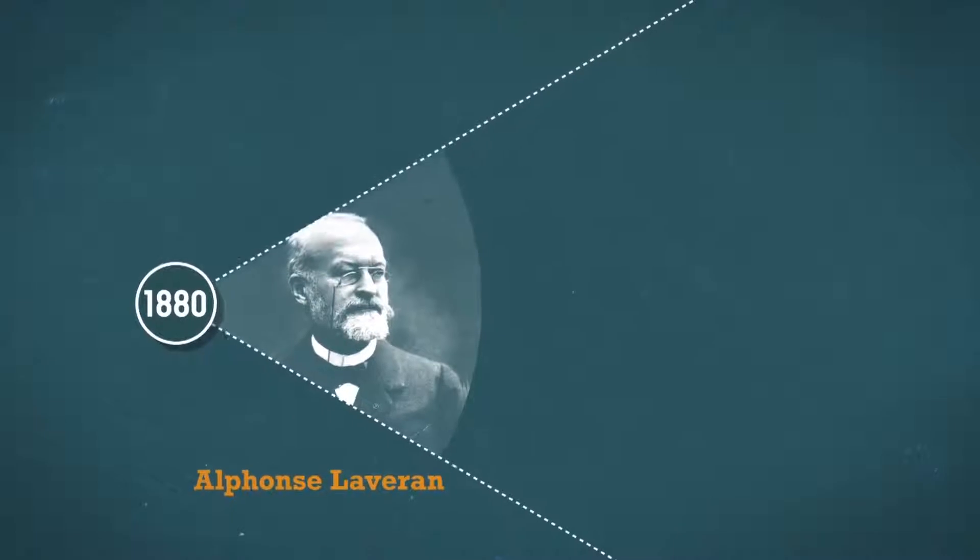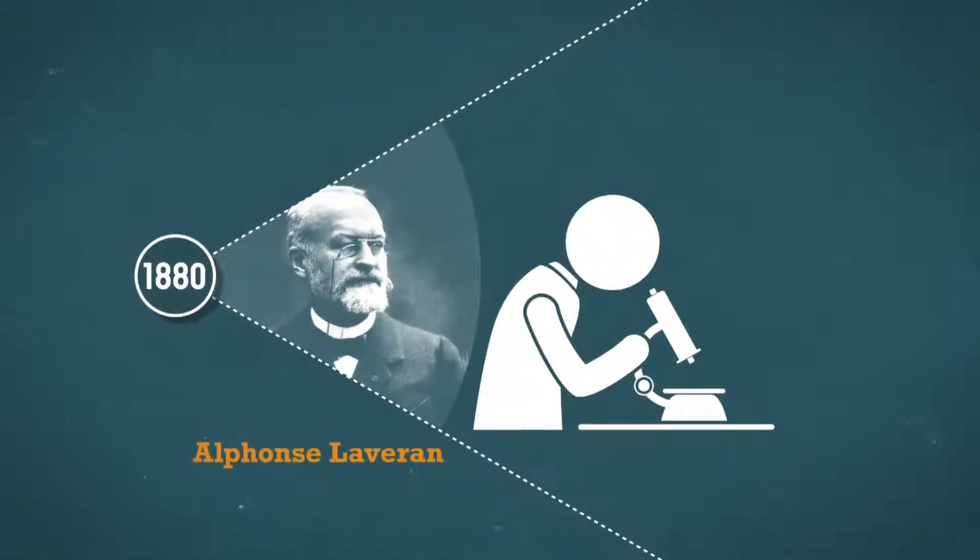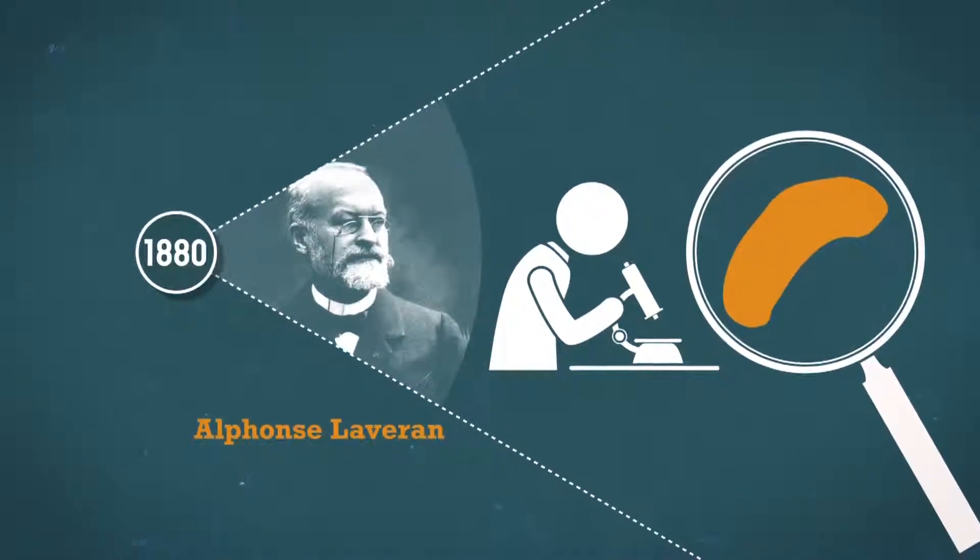In 1880, French doctor Alphonse Laveran was the first to observe under the microscope falciparum, the malaria parasite, in patients' red blood cells.